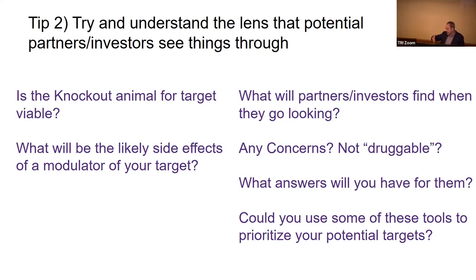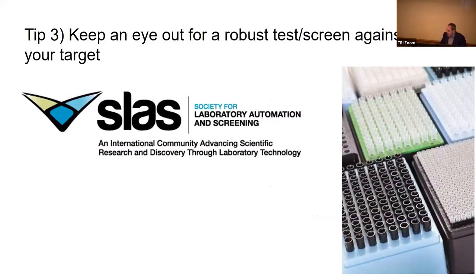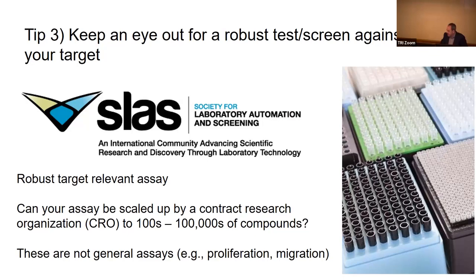The third tip is to keep an eye out for a robust assay and screen against your target. There are whole conferences with thousands of people focused on laboratory automation and screening to accelerate drug discovery. You want a robust, target-relevant assay. As you're researching your target, keep in the back of your mind what assay could be used to find a drug against it. Can your assay be scaled up by a contract research organization to screen hundreds of thousands or millions of compounds? Getting a paper might require showing it stops proliferation or metastasis in vivo, but that's not an assay for a drug discovery screen — think about what specific assay could help a drug discovery person find an inhibitor of your target.